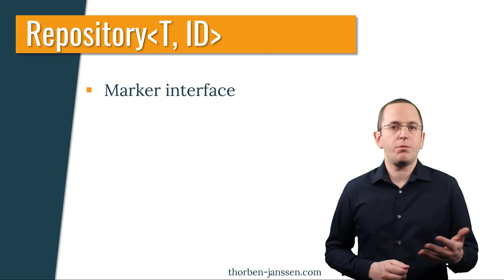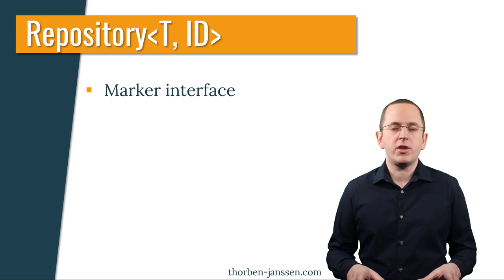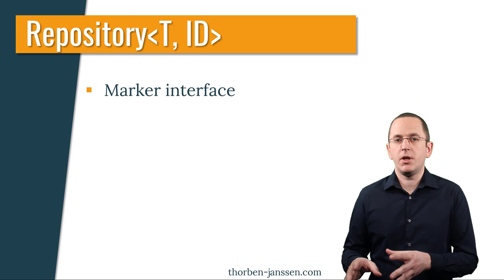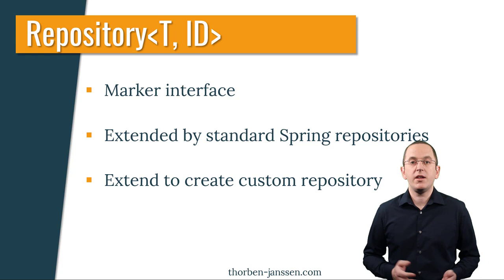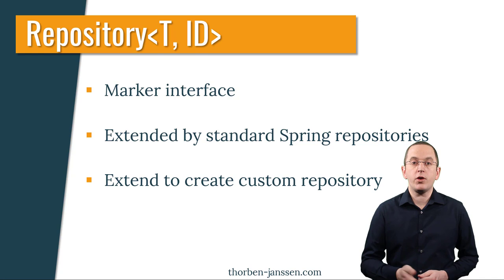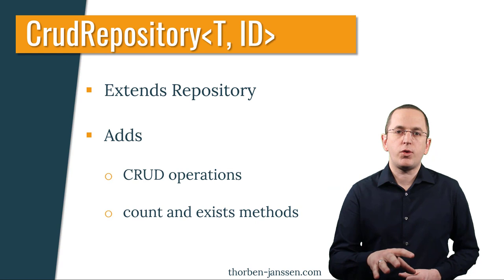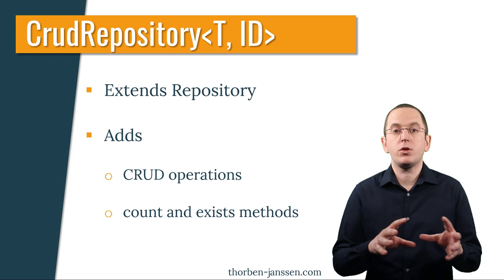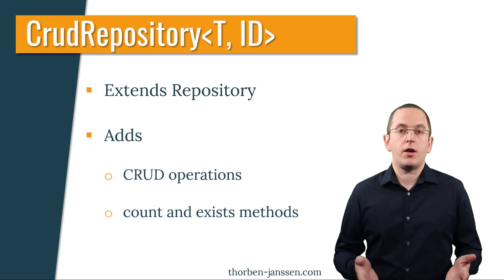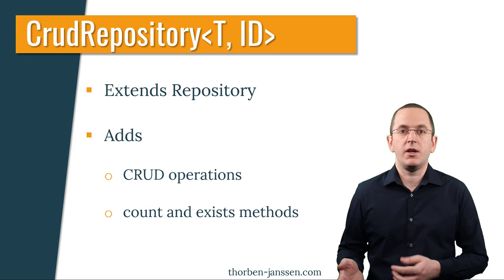The Repository interface is a pure marker interface that enables Spring to find all kinds of repositories. It doesn't define any methods — it only captures the type of the entity and its ID attribute. You can either extend this interface yourself or use one of the following interfaces defined by Spring Data and Spring Data JPA. The CrudRepository extends the Repository interface and defines a set of methods to create, read by ID, update, and delete entity objects. You can also count all entities of this type or check if an entity with the provided primary key exists.